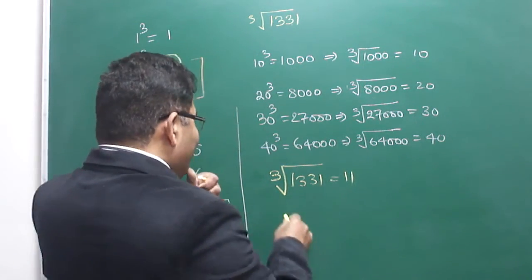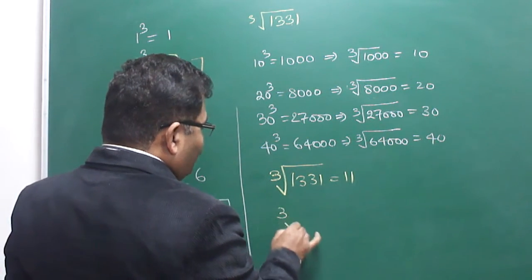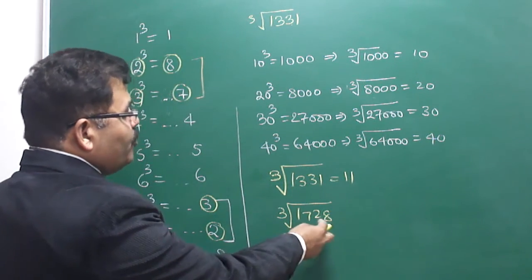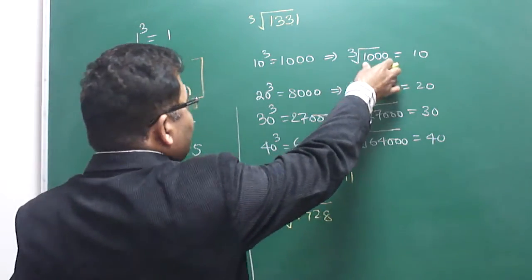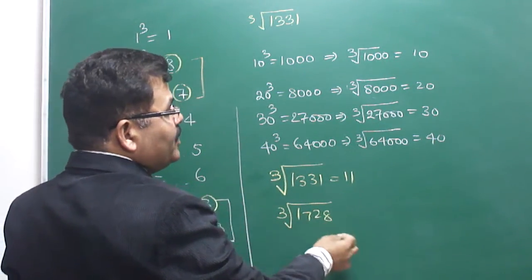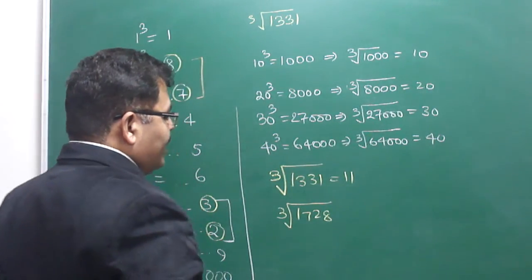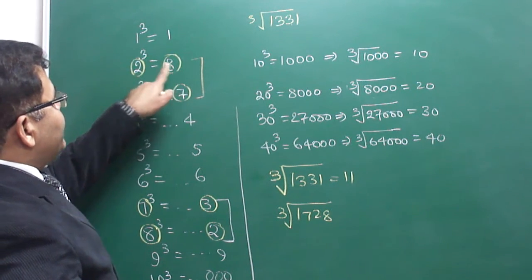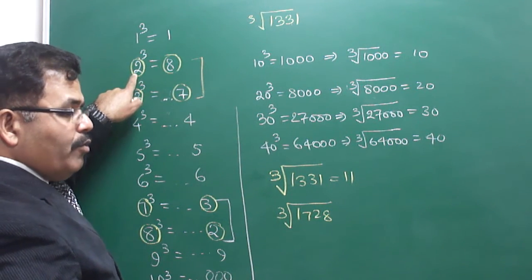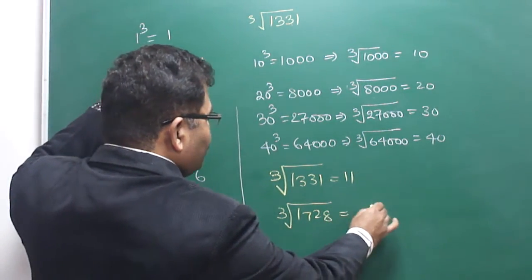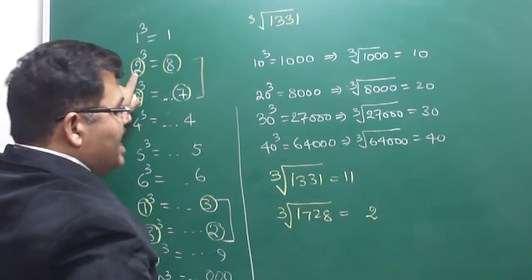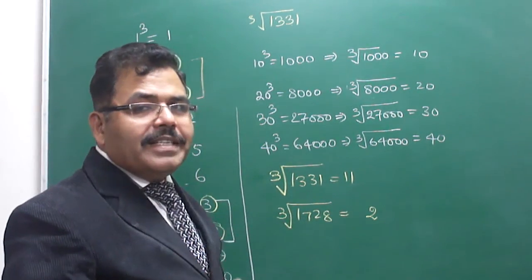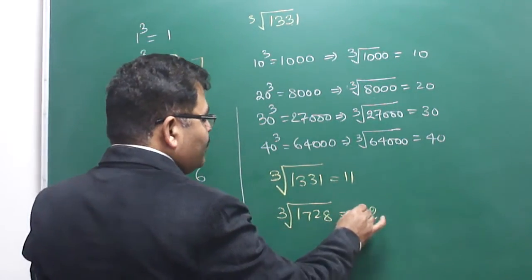Similarly, suppose you have to find the cube root of 1728. This is also a number greater than 1000 and less than 8000, so the answer lies between 10 and 20. The unit place is 8, which ensures that the unit place in the cube root must be 2. The number between 10 and 20 whose unit place is 2 is 12. So the answer is 12.